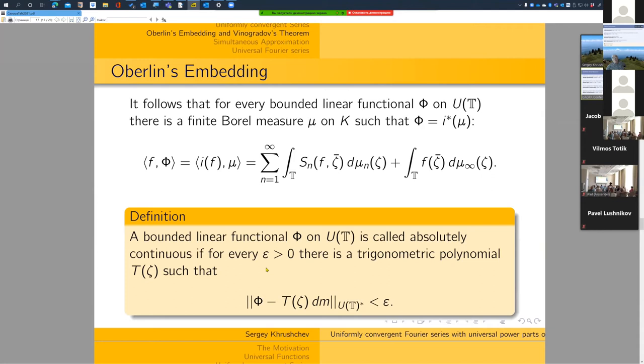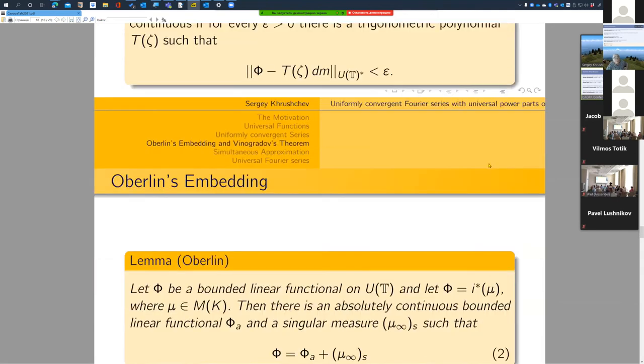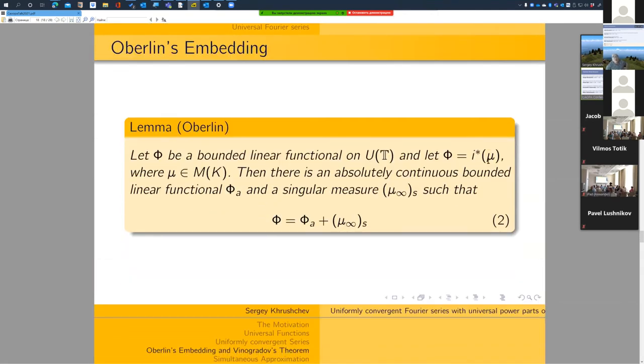But when we thought about this with Vinogradov long before Oberlin, Vinogradov's idea was to do the same, but we did not consider these parts. So it was just a mistake I think not to do this. So if you take any linear functional on the space of uniformly convergent series, it is called absolutely continuous if for every epsilon bigger than zero there is a trigonometric polynomial such that the norm in the dual space is smaller than epsilon. So this functional in this case is called absolutely continuous. The advantage of U of T is that the distributions which are functionals on U are well described as sequences of measures.